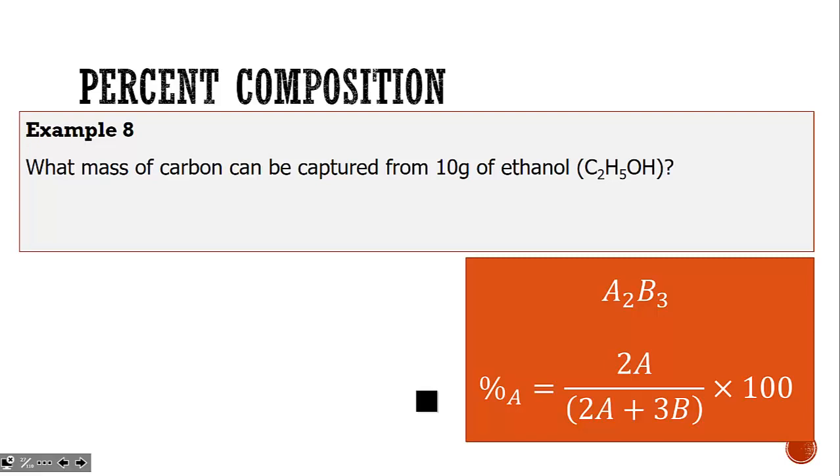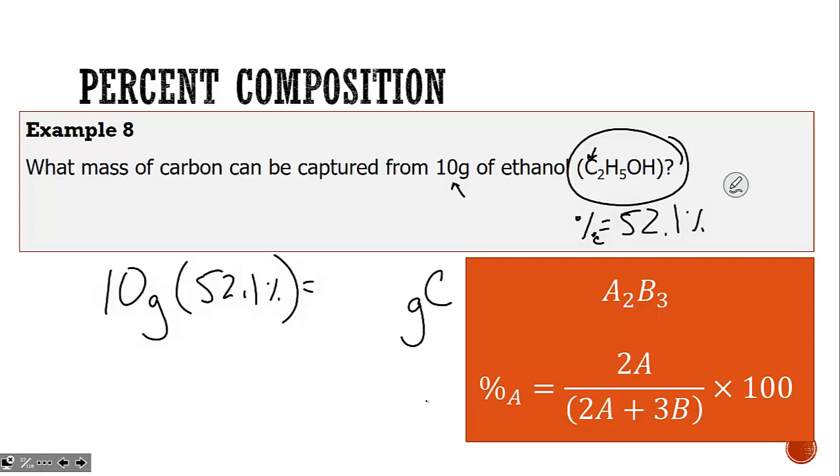We use this process in smelting of substances to determine if it is economically friendly. While not practical to pull carbon out of ethanol, we could figure out how much carbon could be removed if we have 10 grams, using the knowledge that 52.1% is carbon.